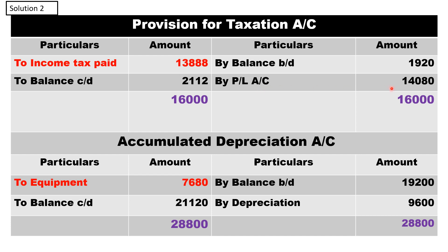By profit and loss account fourteen thousand eighty — that is the provision made during the year as given in the income statement. Whenever tax is paid it is an expense, so tax paid comes on the debit side. If provision is made it comes on the credit side; if tax is paid, debit side. Income tax paid: the differencing answer is thirteen thousand eight eighty eight. Opening balance, then closing balance two thousand one twelve; credit side by P&L account fourteen thousand eighty. Total credit side sixteen thousand, minus two thousand one twelve gives IT paid thirteen thousand eight eighty eight.